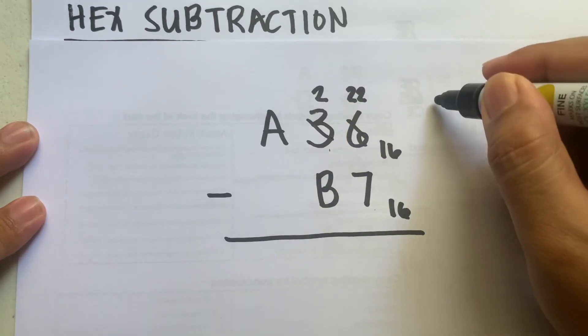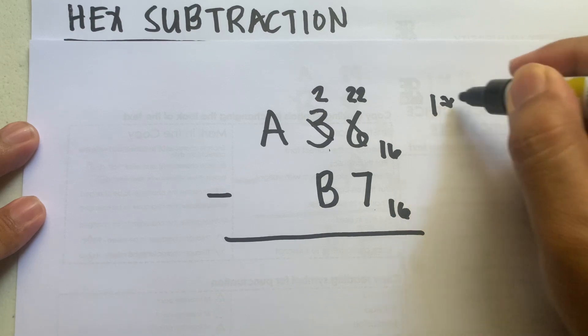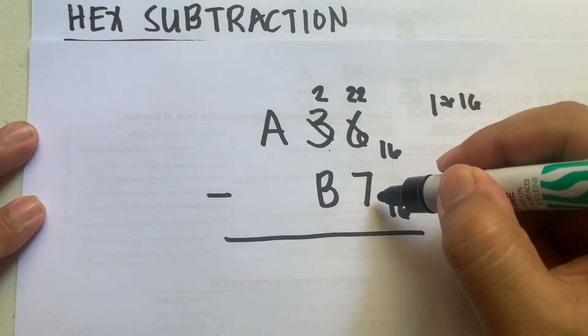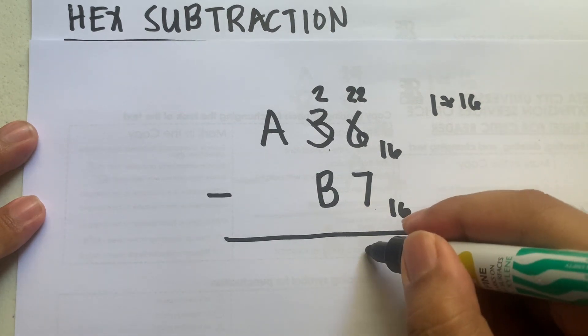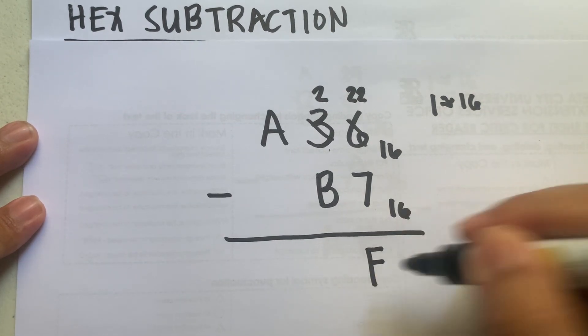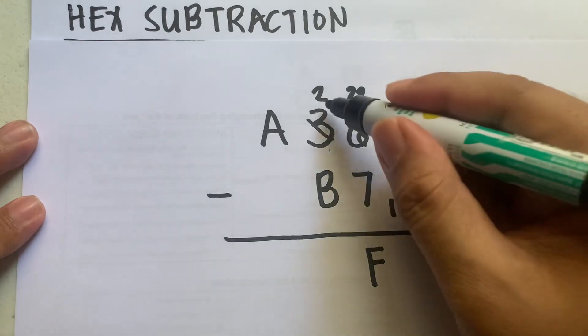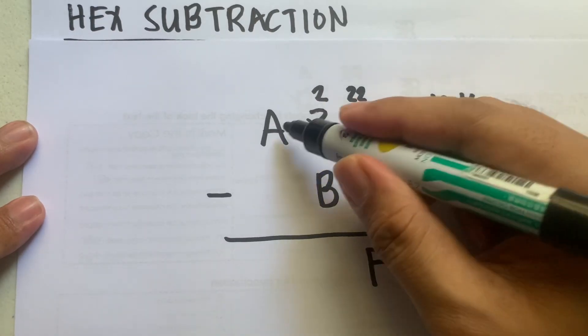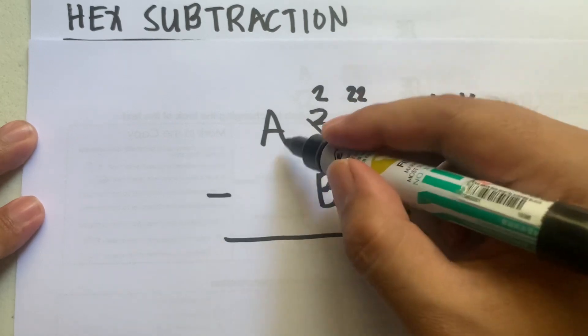22. Why 22? Again, each one borrowed is equivalent to 16, so 22 minus 7 is 15, and 15 is represented by the letter F. Now, 2 minus B, which is 11, cannot be done, so 2 will borrow one from A. A here is 10, so A